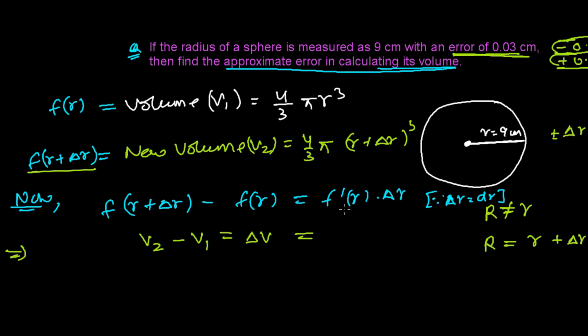And this equals f'(r). So f'(r) is actually just the derivative of this function. f(r) = 4/3 π r³, so the derivative of f(r) will be...